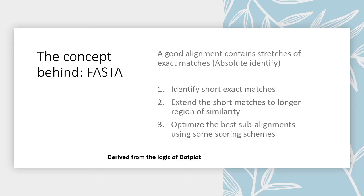First, a small region is aligned and then it is extended in both the right and left directions to extend the possibility. After doing that, the best sub-alignment is optimized using some scoring schemes. After finding the match, those alignments which are possibly good are then optimized using scoring schemes like the BLOSUM Substitution Matrix Scoring System and PAM Substitution Matrix Scoring System. These biologically meaningful scoring schemes are used to make the alignment optimal and best out of all the alignments.